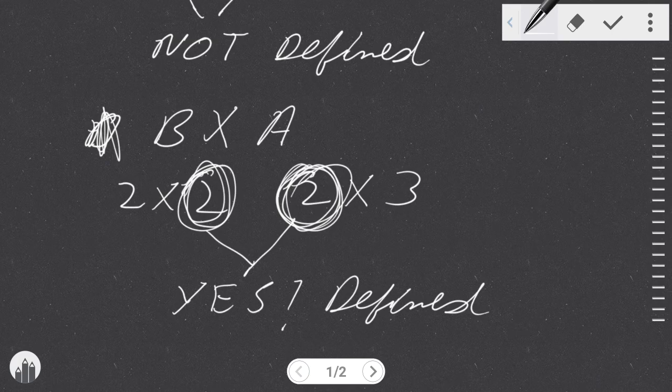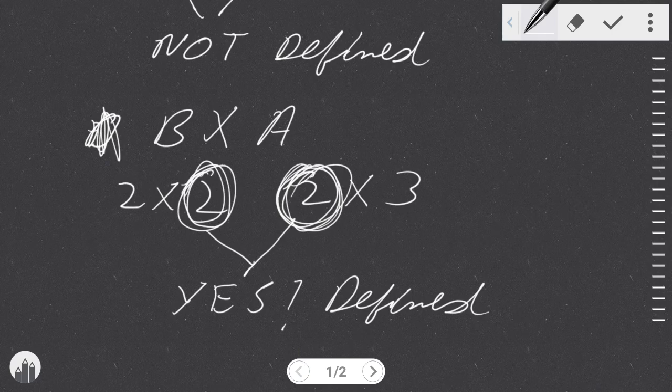So as I said before, it's not so straightforward when it comes to multiplication. A times B may not be defined, but if you do B times A, it can be defined.